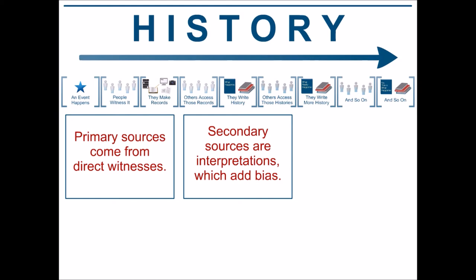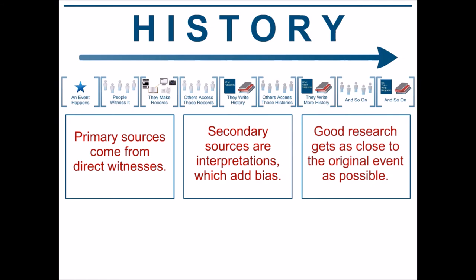Secondary sources are interpretations of primary sources. Whenever something is interpreted, the author is going to add bias — it's unavoidable. For that reason, good research gets as close to the original event as possible. To do that, you need to use primary sources.